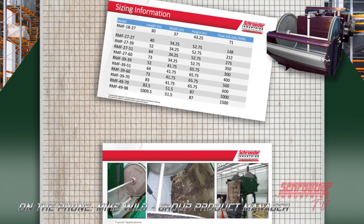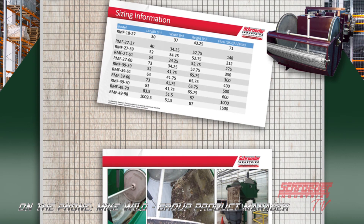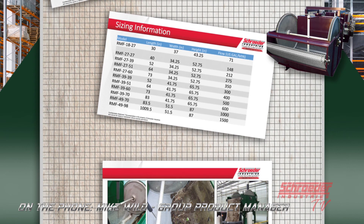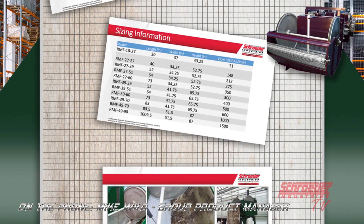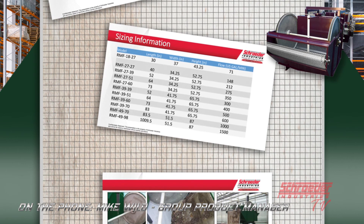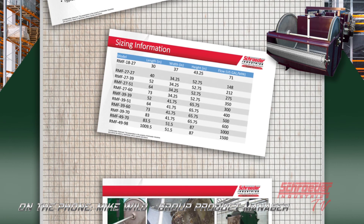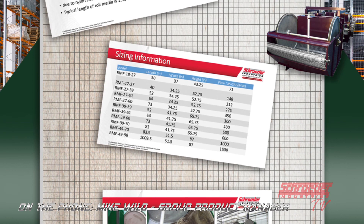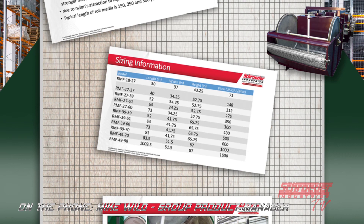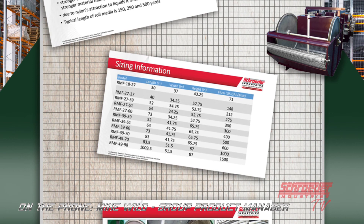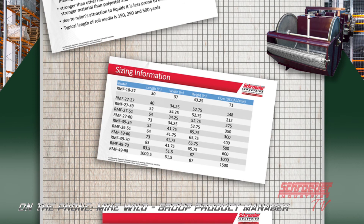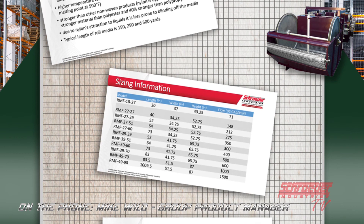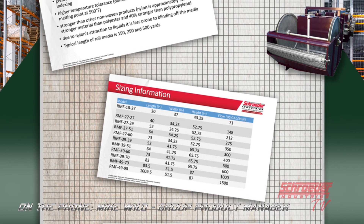When sizing the system, one of the things we like to do if we can't run a pilot is at least get samples. Flow ranges from as low as 71 gallons per minute up to 1,500 gallons per minute for the largest unit. These are just rules of thumb — real sizing takes place based on testing and the samples received. It depends on the dirt loading, the flow, and the type of fluid passing through. For heavier dirt loading, we may go to half the listed flow size, but it's very dependent on what we get back from sampling and pilot testing.